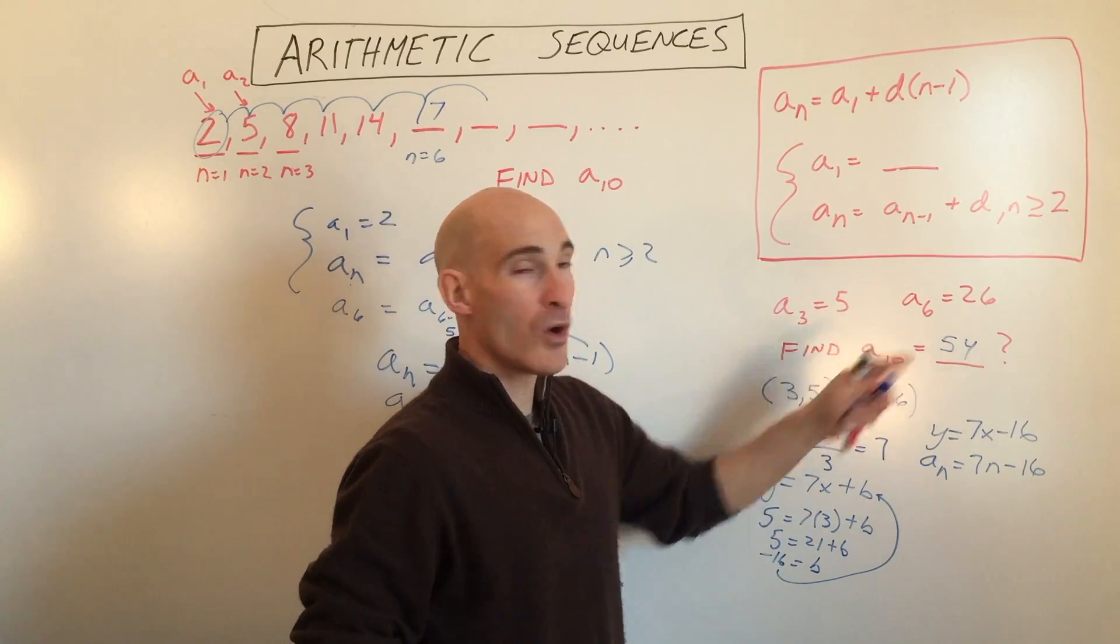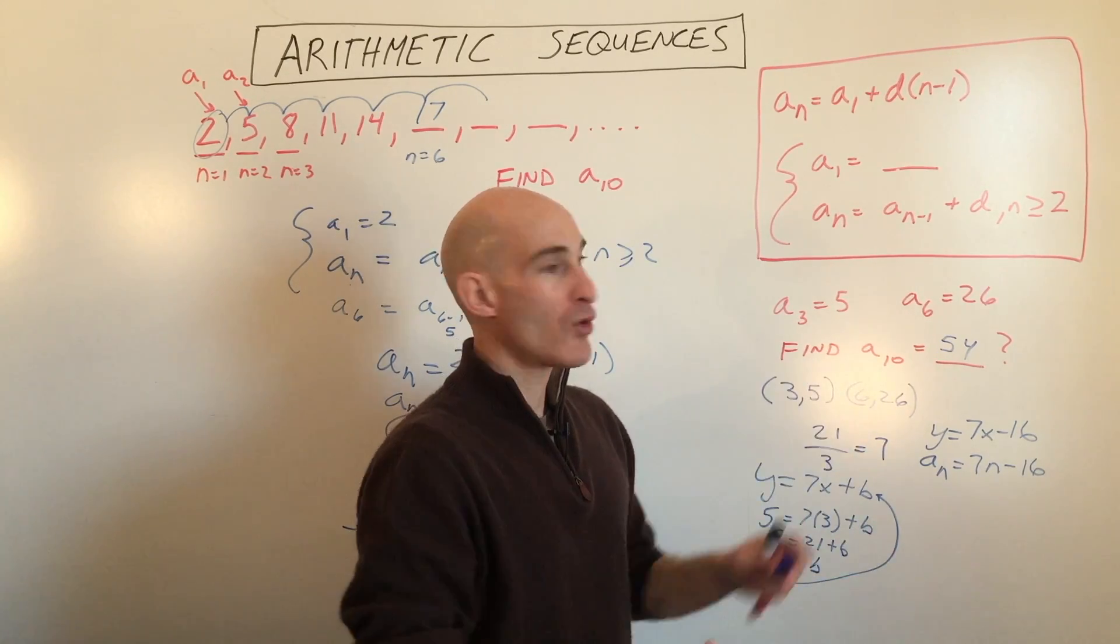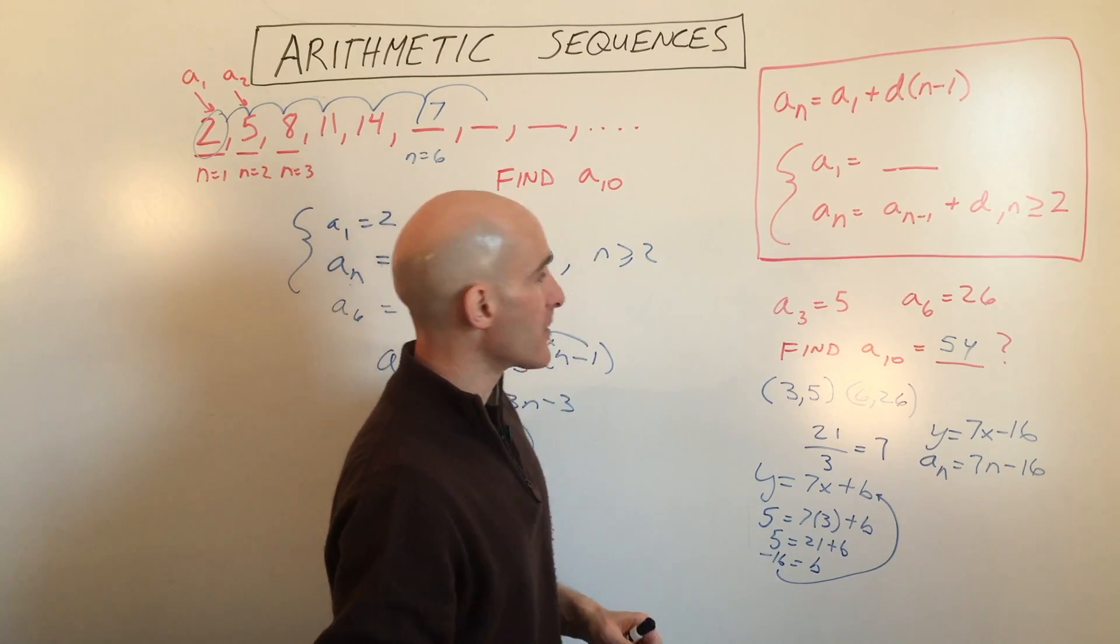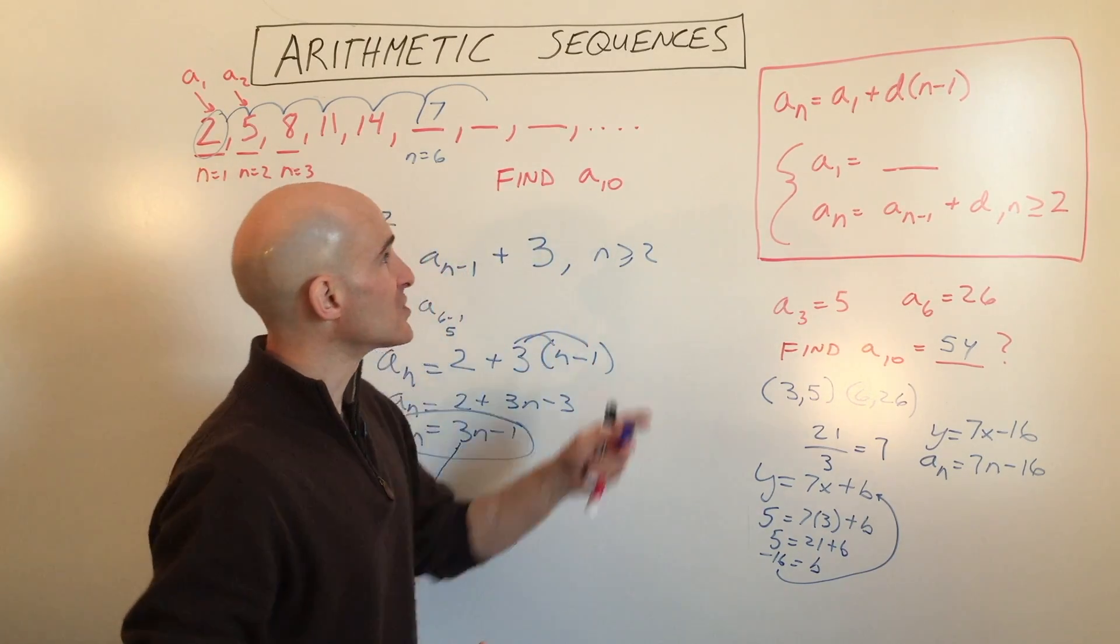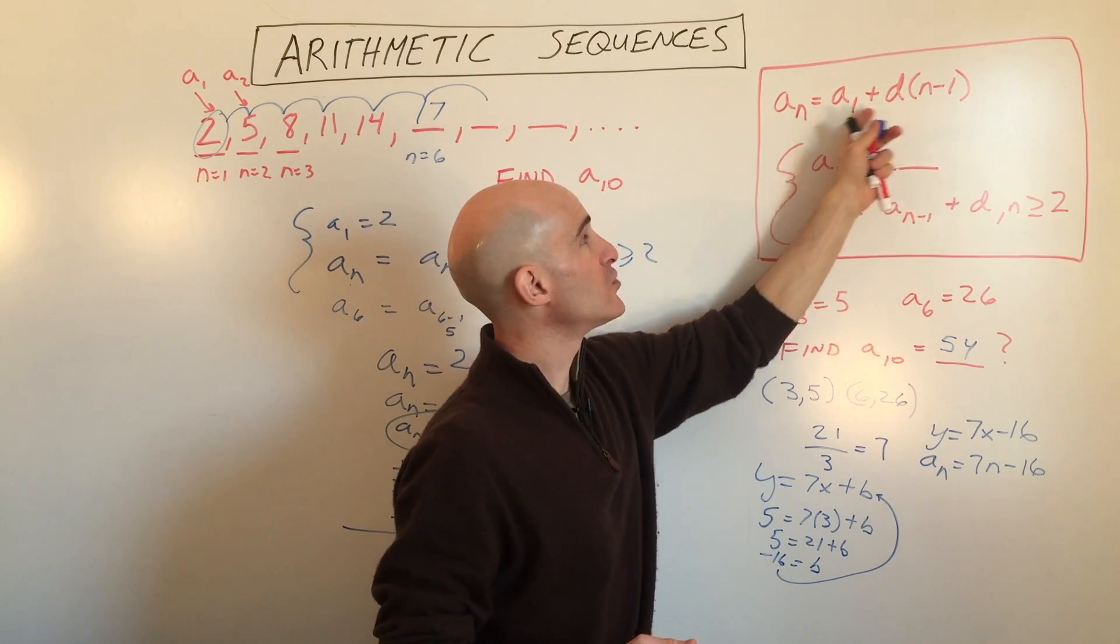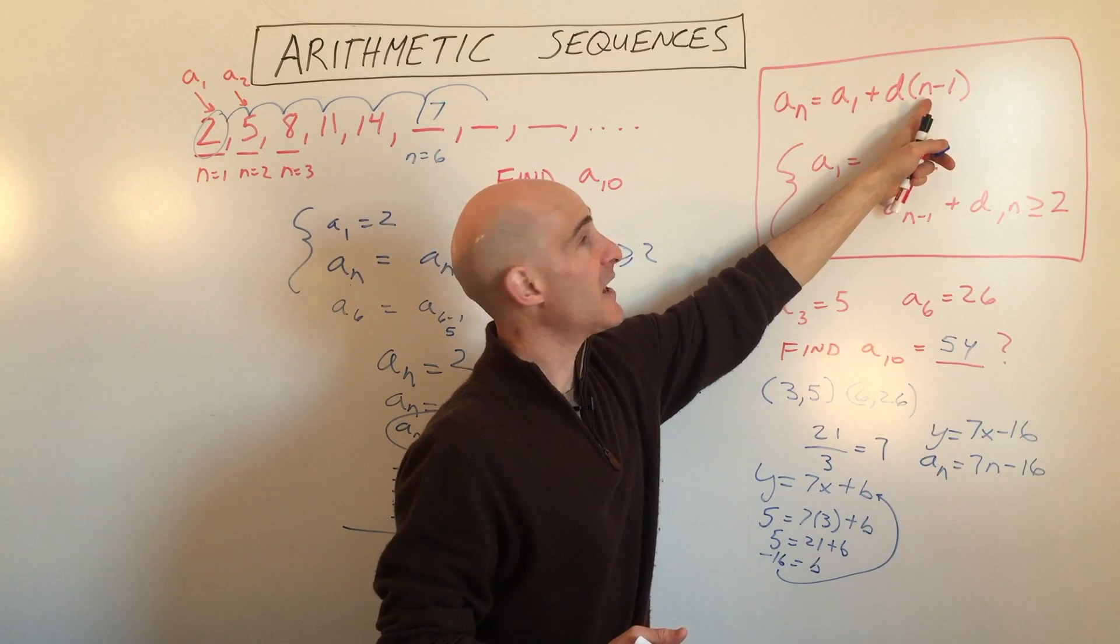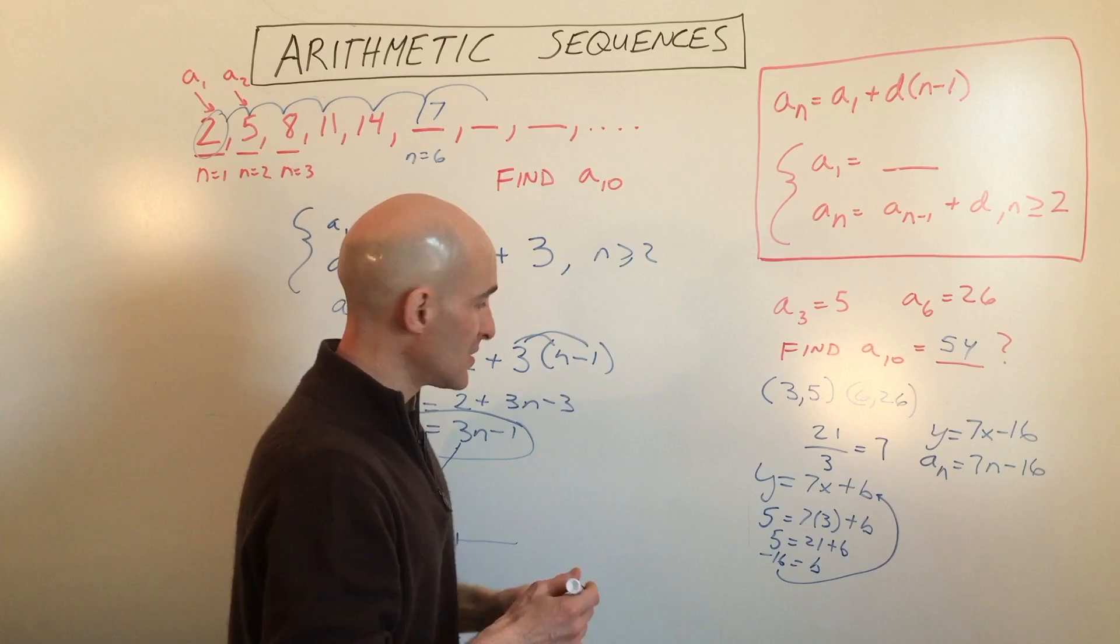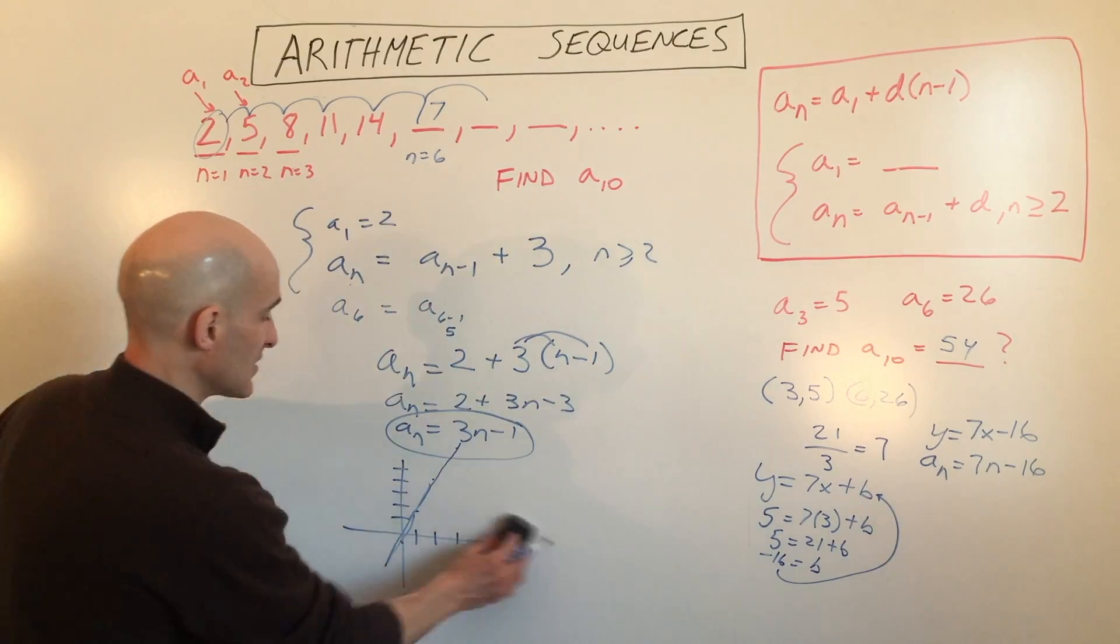So this is one way to work with it. Just work with it as two data points. Think of the equation of a line. There's another way to do it too, and that's where you can actually write a system of equations. So we're going to use this explicit formula here. And we're going to write two equations using a sub n and n, and then we can solve for a1 and d. I'll show you what I mean.